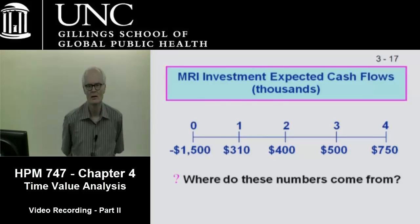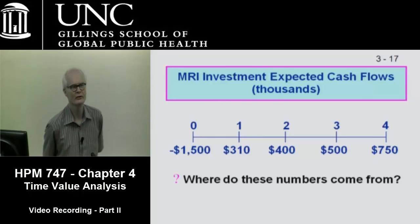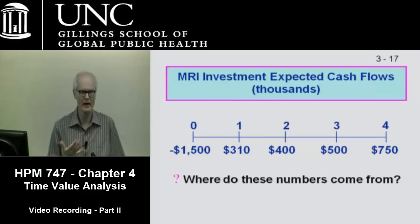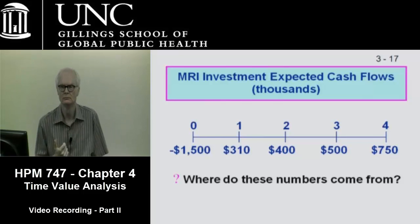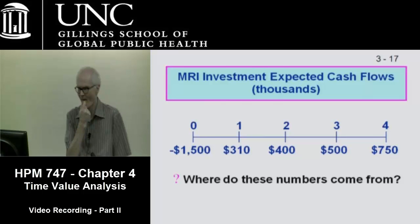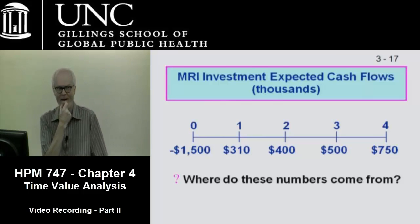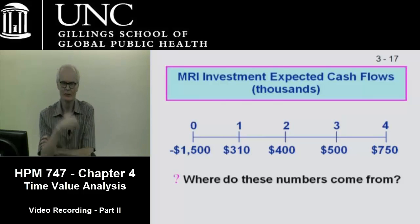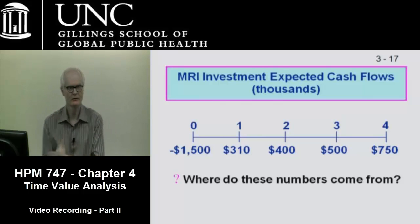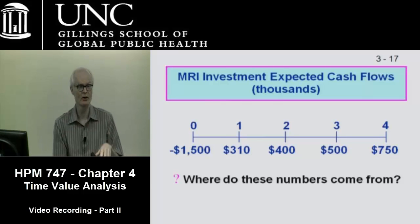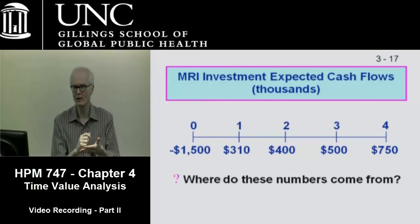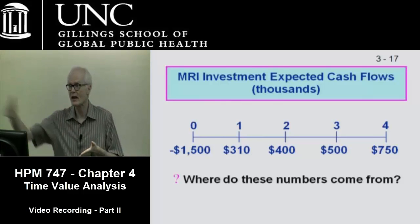They're your estimated net cash flows. Why make that qualification? Because it's revenues minus expenses. Your capital cost is in year zero — we're going to write GE a check for $1.5 million to get an MRI in. And that MRI will then generate a series of cash inflows and a series of cash outflows.